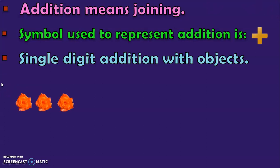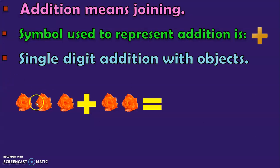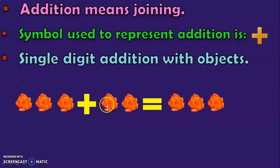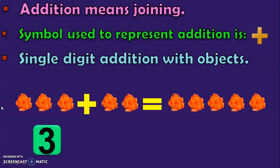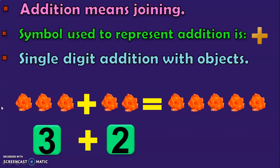You have 3 flowers with you. Your mother buys 2 more flowers from the market. What is the total number of flowers with you now? Let us count: 1, 2, 3, 4, and 5. So you will have 5 flowers with you now. Let us represent this in numbers: you have 3 flowers and your mother buys 2 more flowers from the shop. 1, 2, 3, 4, and 5.